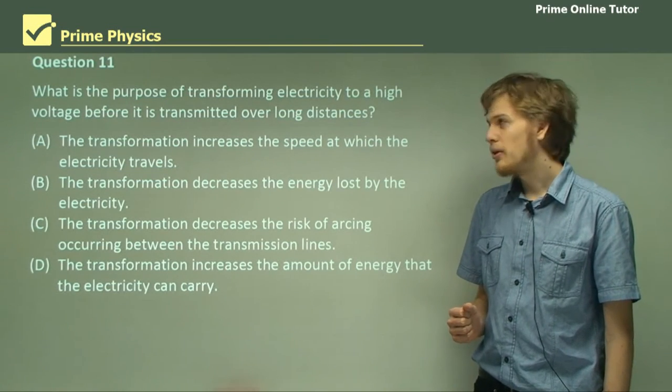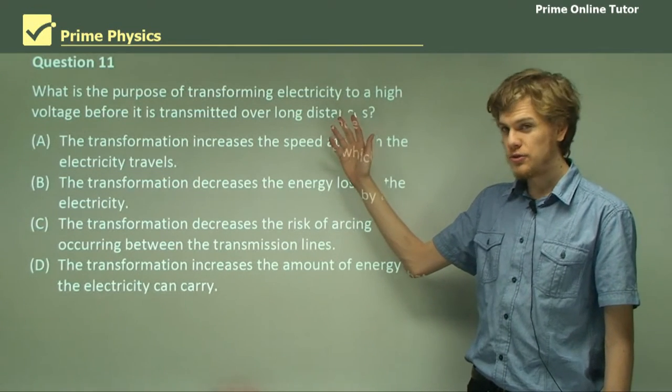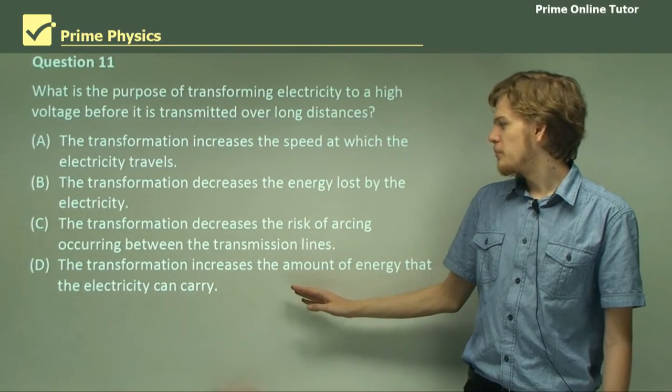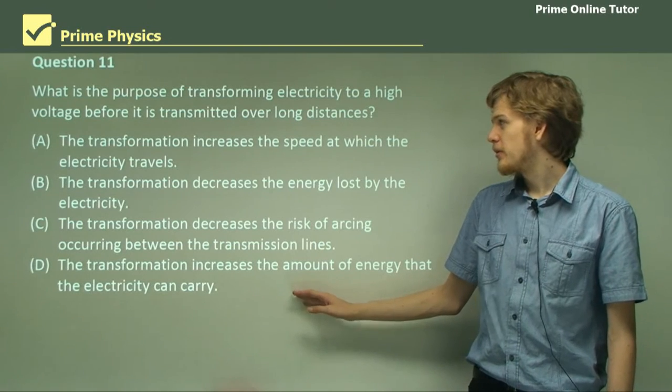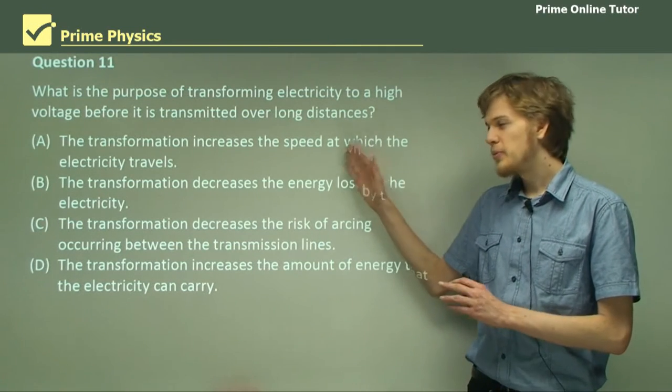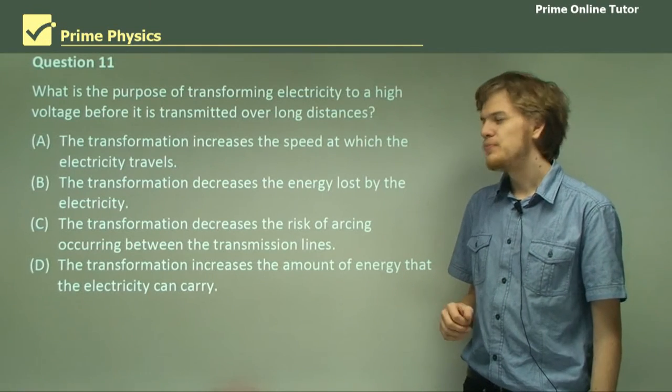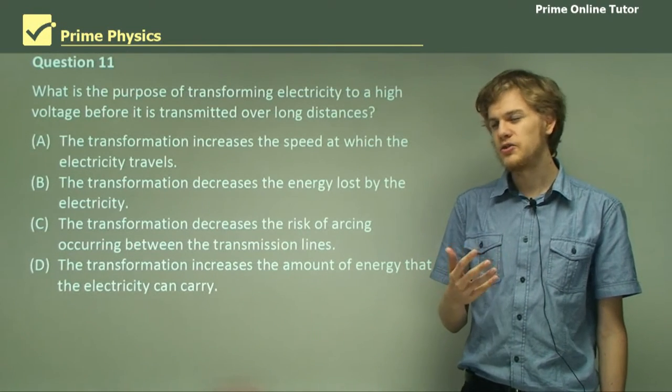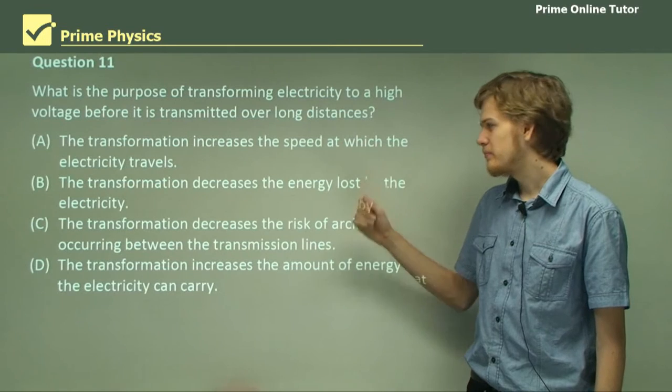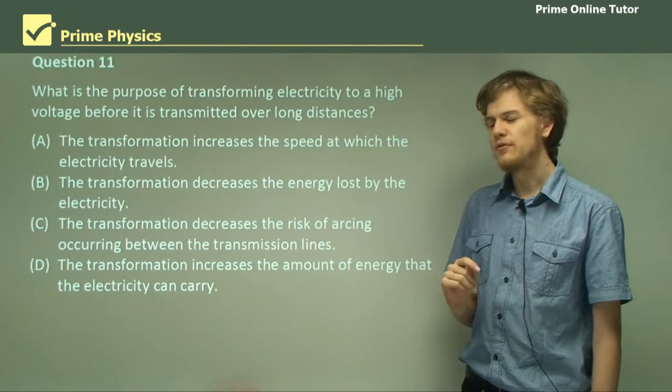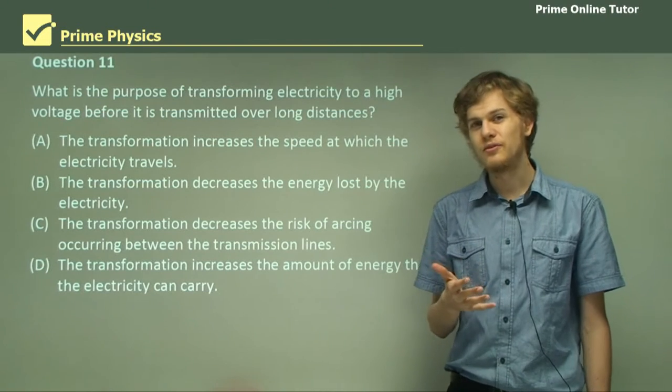Now remember, when we transform electricity, we don't change the amount of energy in that electricity. So it can't be D. The speed of electricity is fairly constant. Voltage may have a small effect on exactly the speed but not a very large one. The transformation will not decrease the risk of arcing. It will in fact increase the risk of arcing.